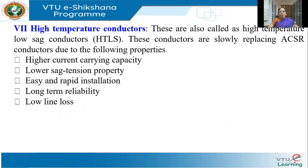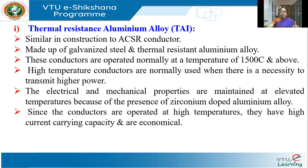Next, we have what are called HTLS — high temperature conductors. These have very low sag, and slowly they are replacing ACSR conductors because of their very high current carrying capacity, low sag, good tension properties (meaning even if tension is high, the sag is low), easy installation, reliability, and low line losses. They are still expensive but are becoming a popular choice.